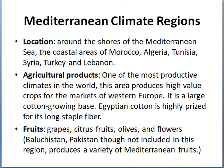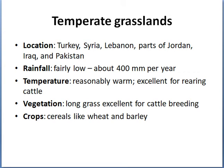As an extra note — Balochistan, though it is not in the Mediterranean climate region, still produces a variety of Mediterranean fruits due to a similarity in climate. The next region is temperate grasslands, found near Turkey, Syria, Lebanon, parts of Jordan, Iraq, and Pakistan. The rainfall is fairly low, about 400 millimeters per year. Temperature is reasonably warm and excellent for breeding cattle. Vegetation is long grass, also useful for cattle breeding. Crops include cereals like wheat and barley.